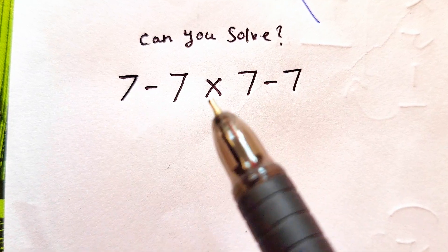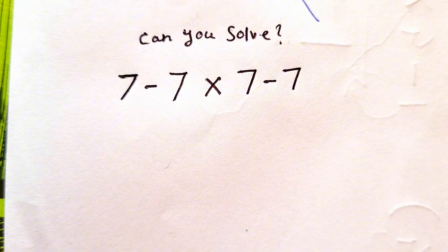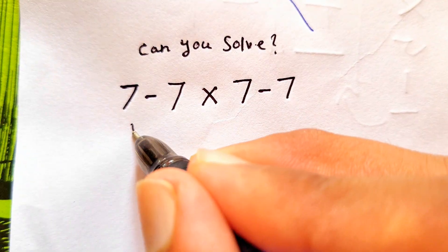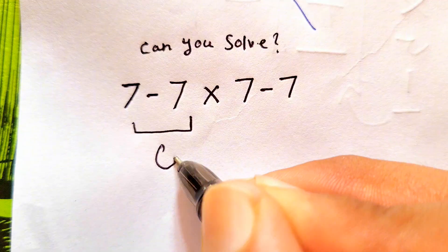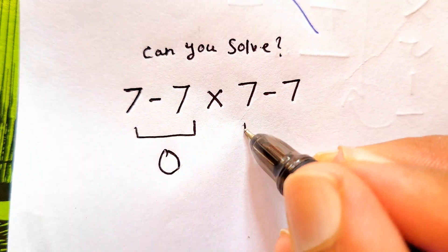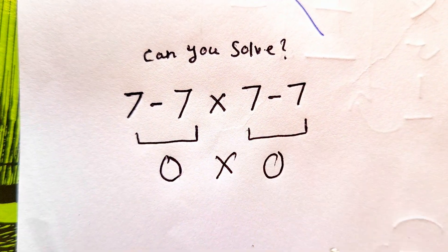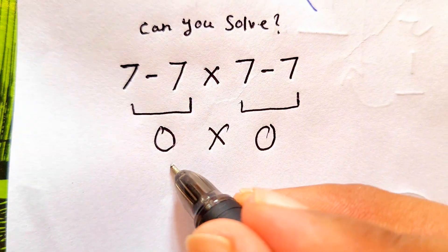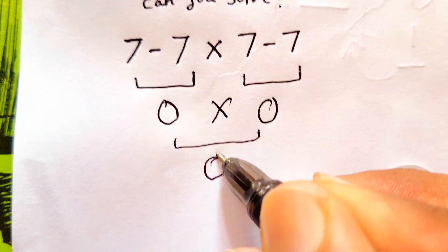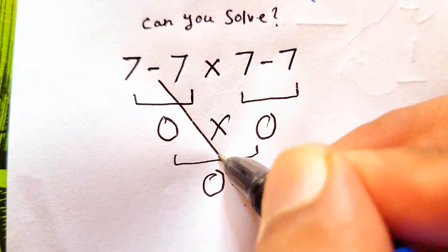Welcome back guys, we have the expression 7 minus 7 times 7 minus 7. So 7 minus 7 gives us 0, and again this 7 minus 7 also gives us 0. As there is multiplication, we need to do 0 times 0, that is simply 0. But wait a second, if you think it's correct, you are totally wrong.